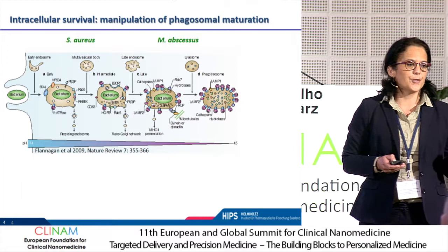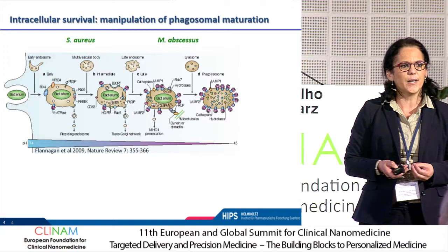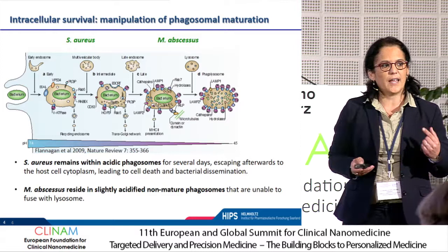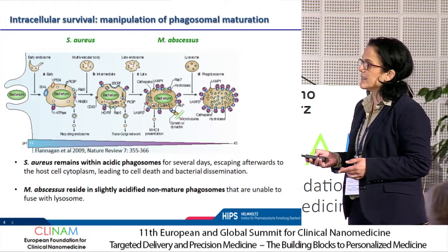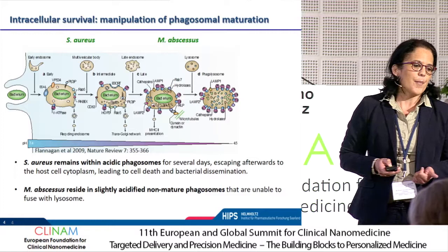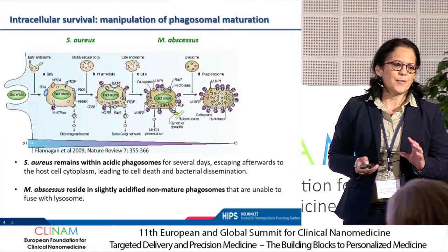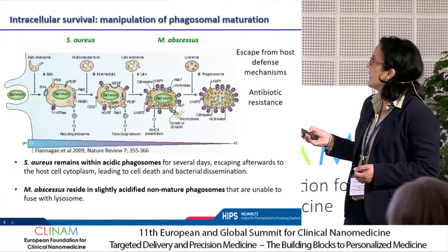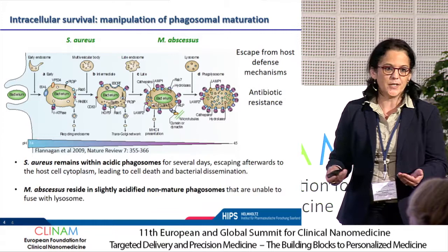When they are inside the cells, they really manipulate the digestive system. In the case of Staph, they proliferate inside acidic compartments and stay there for several days, then escape and infect new cells. For Mycobacterium abscessus, they reside in a phagosome that is slightly mature but not completely mature. With this strategy, they escape host cell mechanisms, which brings antibiotic resistance because you need more drugs to reach them, and in most cases leads to intracellular persistence.